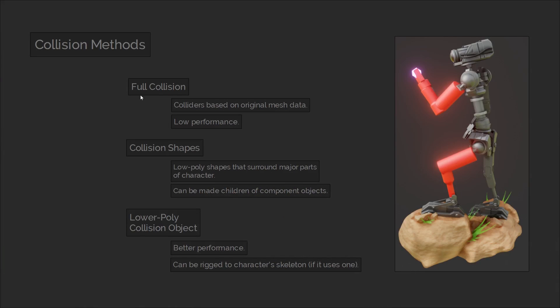First of all we have full collision, which is where every surface on the character is physically reactive — the equivalent of giving each component object its own collider in the physics settings. The second method is to use collision shapes, which are invisible objects that define a boundary around parts of the character, preventing cloth from touching the surface.